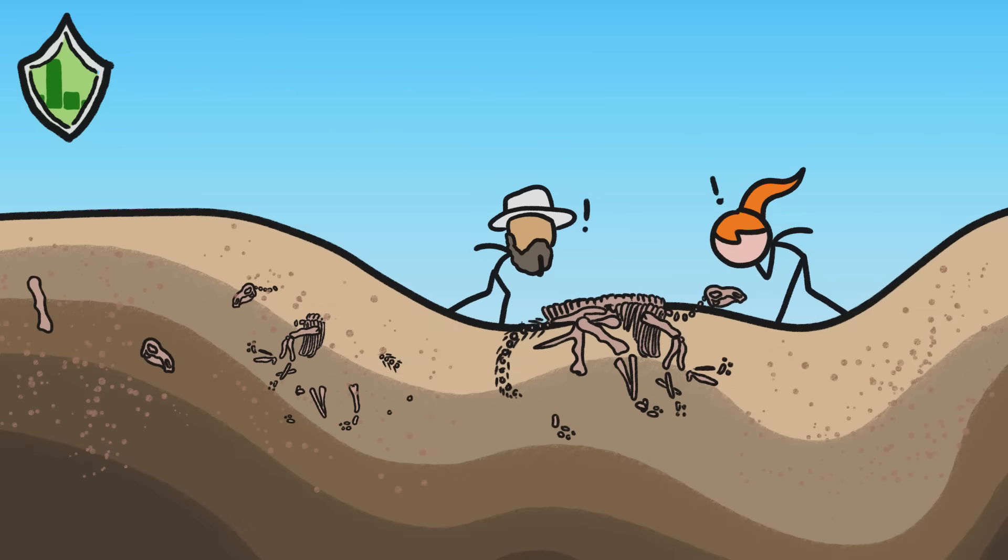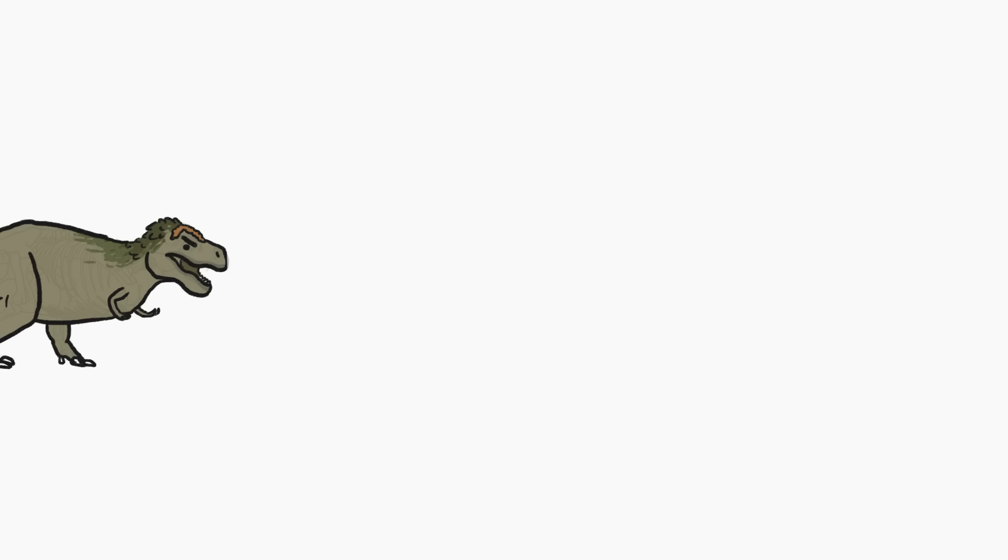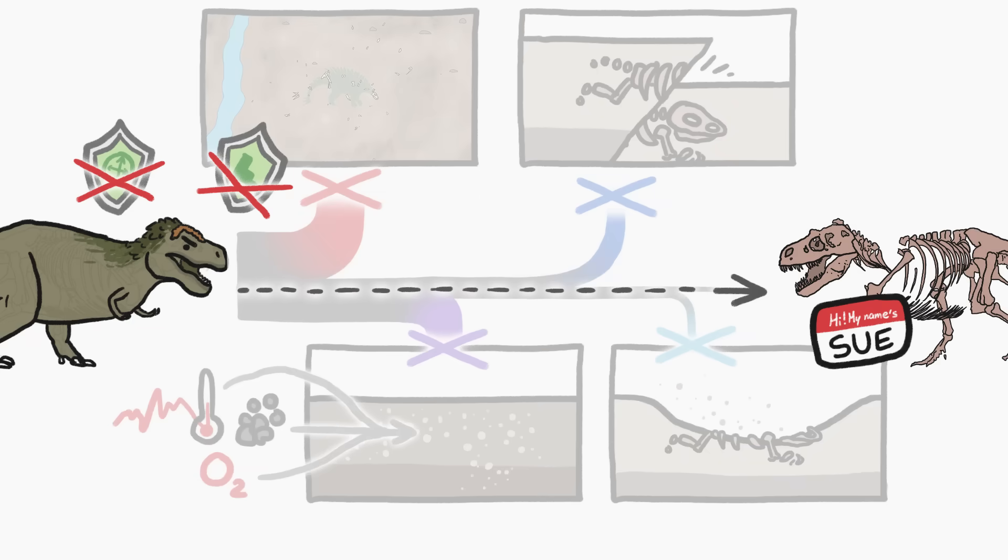So it's more likely that they would make it through the fossilization gauntlet whole. Sue was a T-Rex, a relatively large, relatively uncommon dino, therefore a relatively unlikely candidate to end up so complete. But it happened anyway, probably thanks to a giant debris flow.